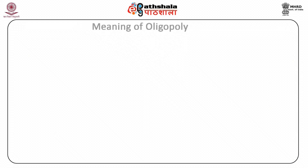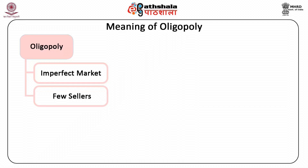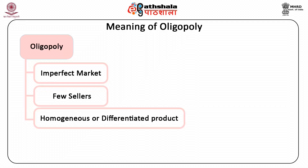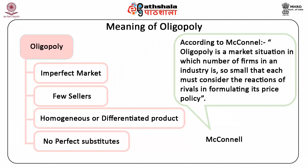Let us firstly understand the meaning of oligopoly. Oligopoly is an imperfect market where there are few sellers producing homogeneous or differentiated products, but the products are not perfect substitutes. Oligopoly has some of the elements of both monopoly and monopolistic market. According to McConnell, oligopoly is a market situation in which the number of firms in an industry is so small that each must consider the reactions of rivals in formulating its price policy.